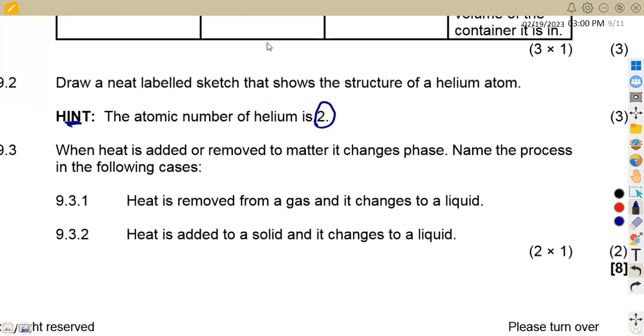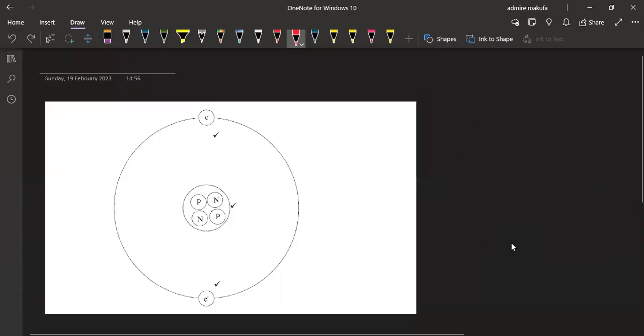This is the structure that we are going to have for helium, having atomic structure of two. We are going to have two on the electron, two proton, two neutron. That is what the person was simply asking you to represent.